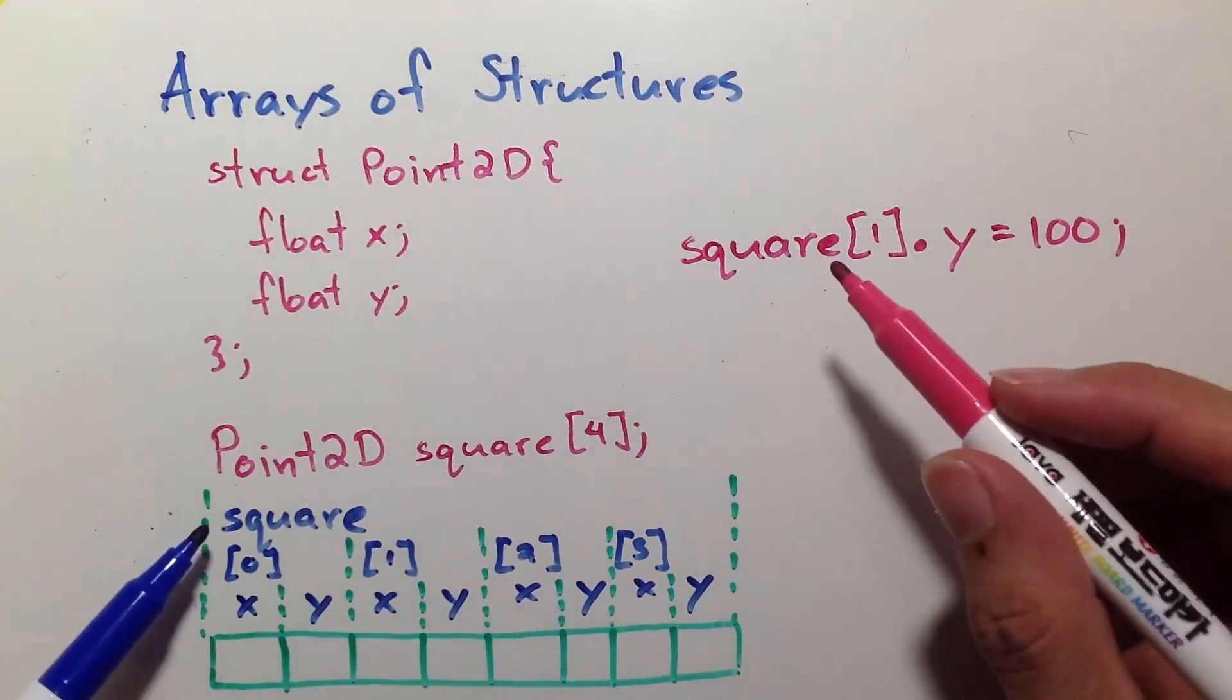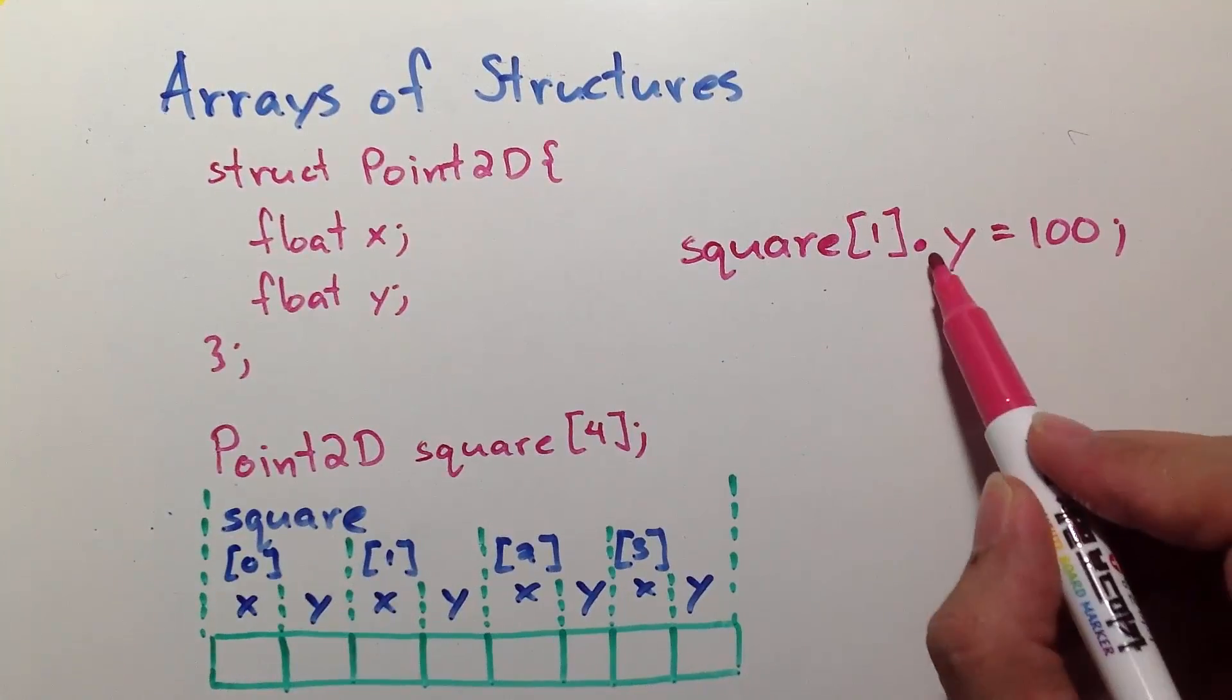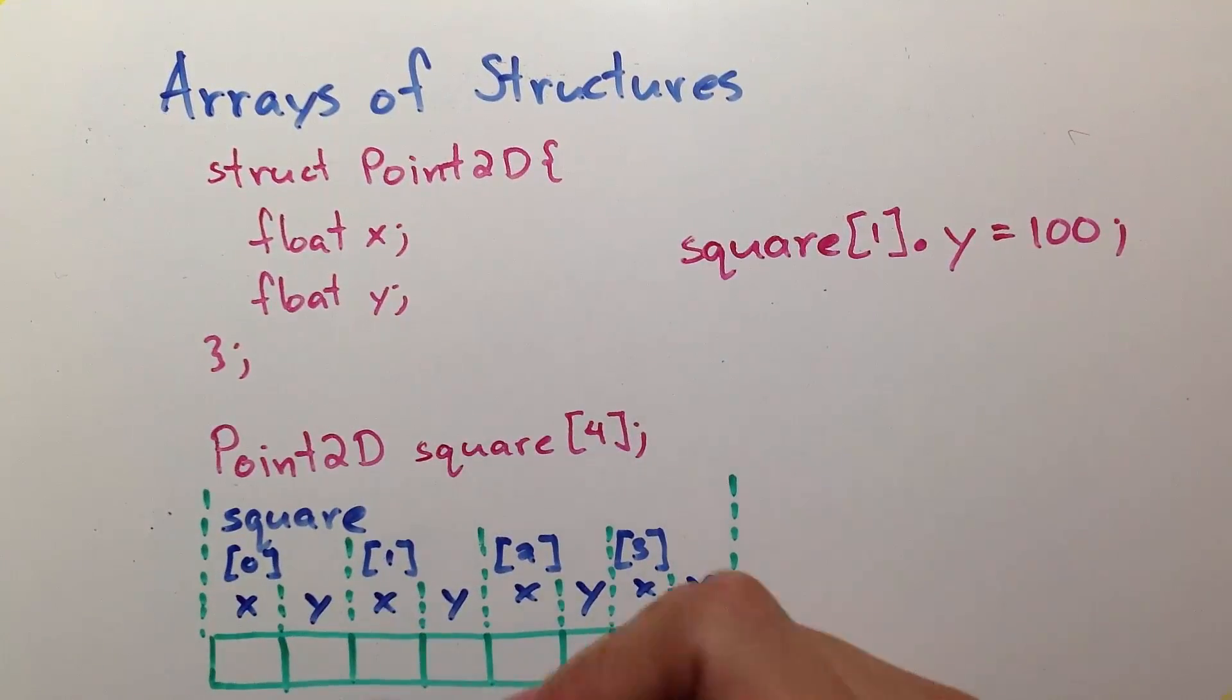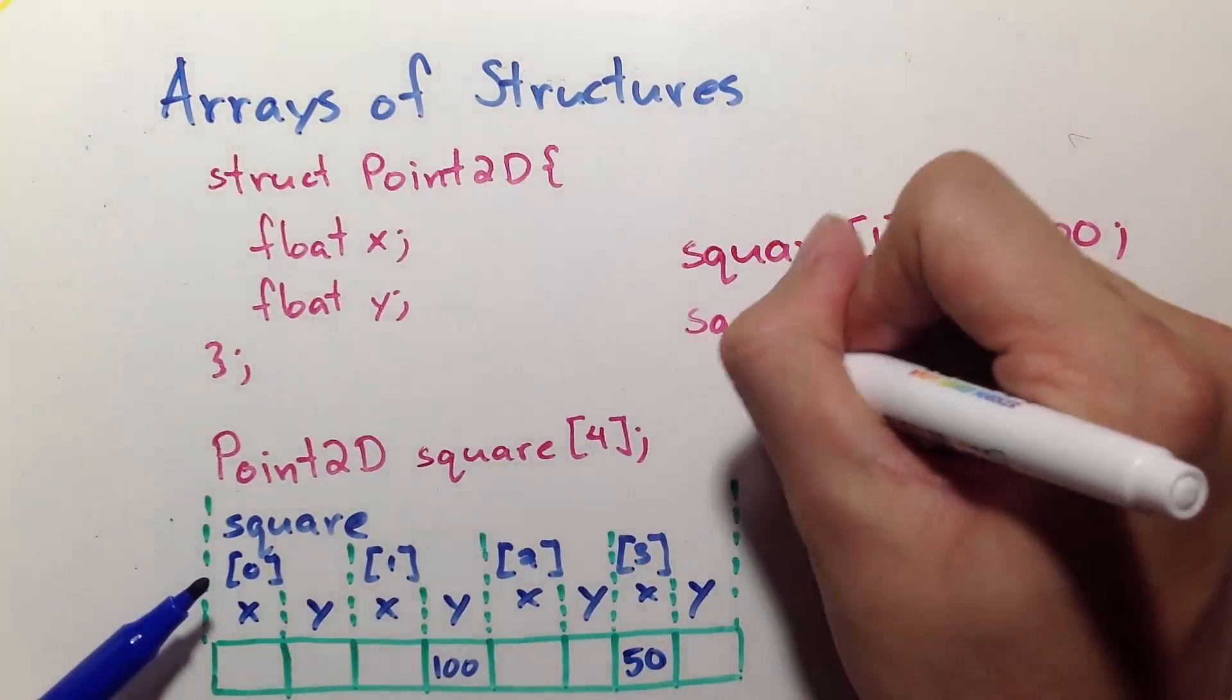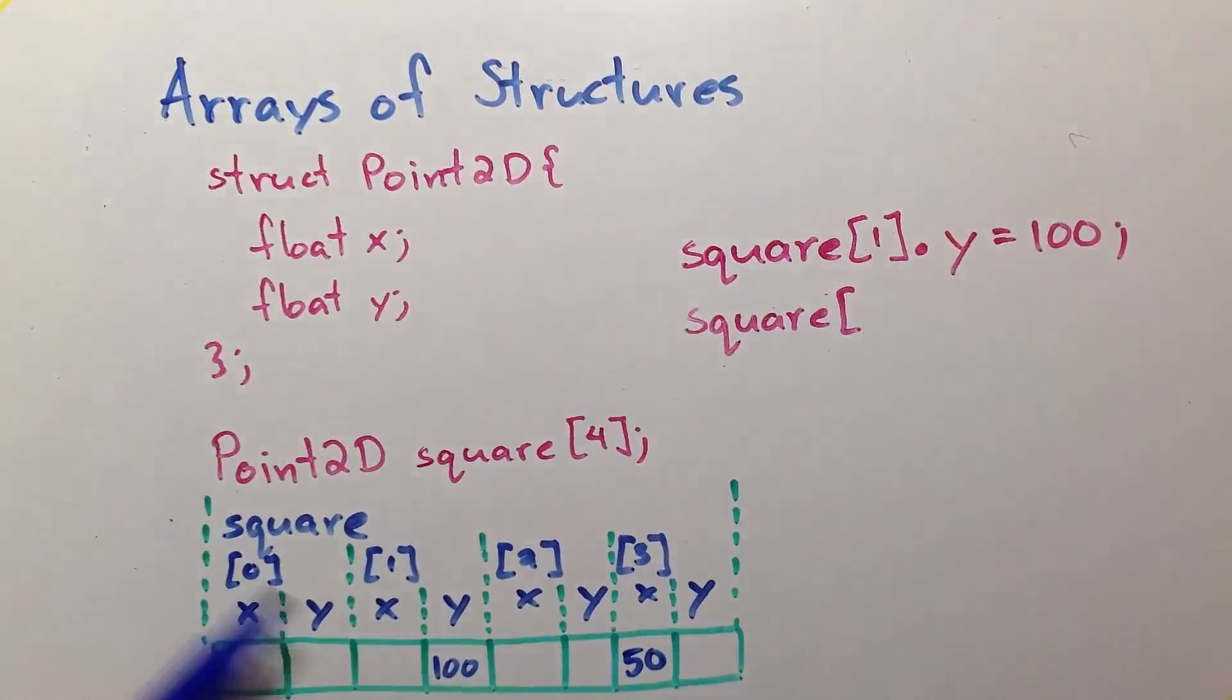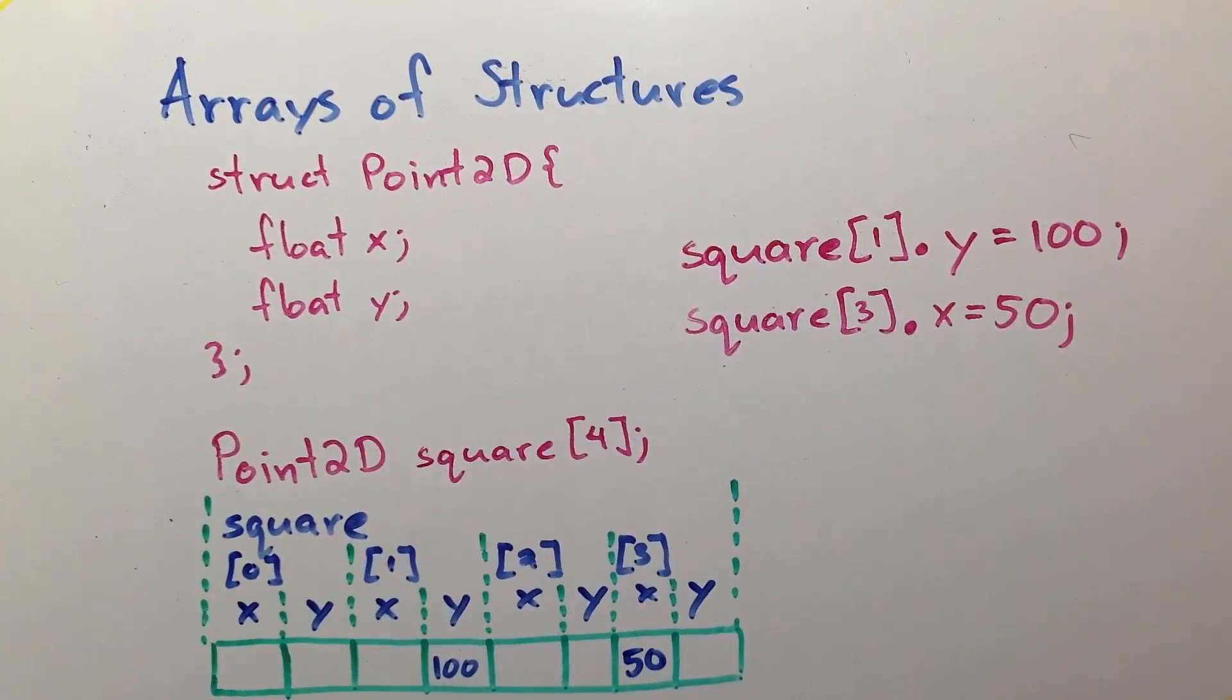Now, what if we want to change this element to 50? What's going to be our statement? Following the diagram, it's actually easy. You start from the variable name, square, and this is found in the fourth element, so 3, access the child, x, and assign it the value of 50.